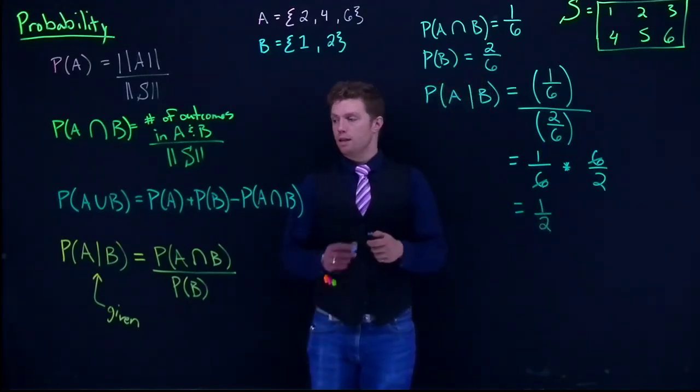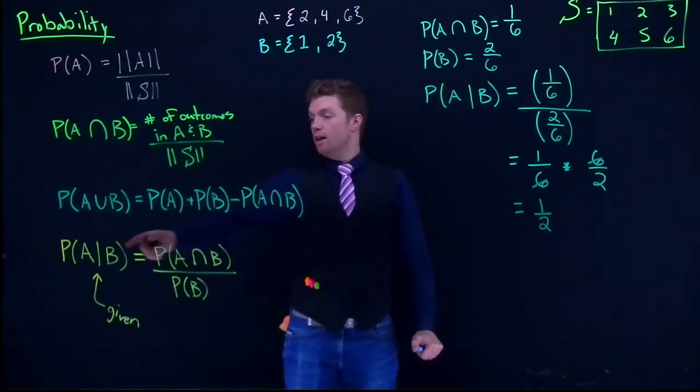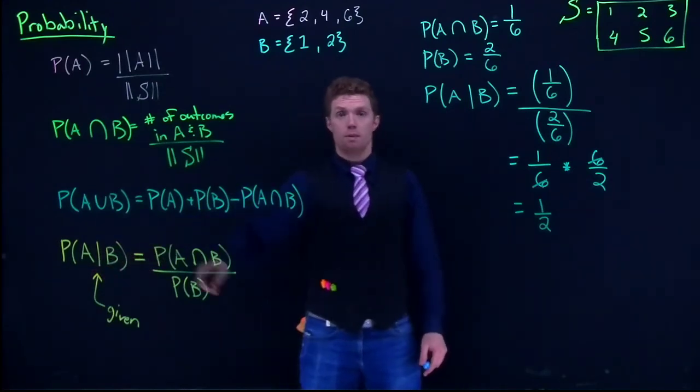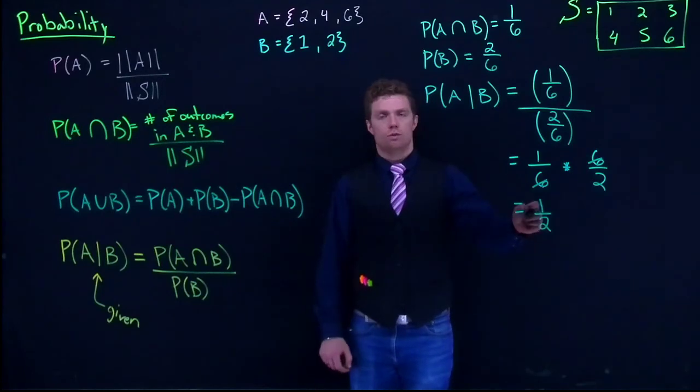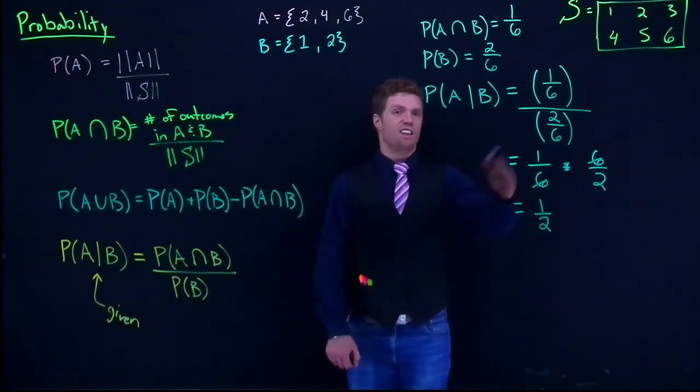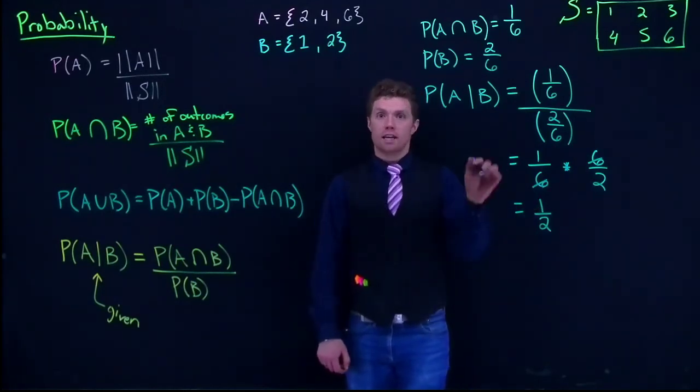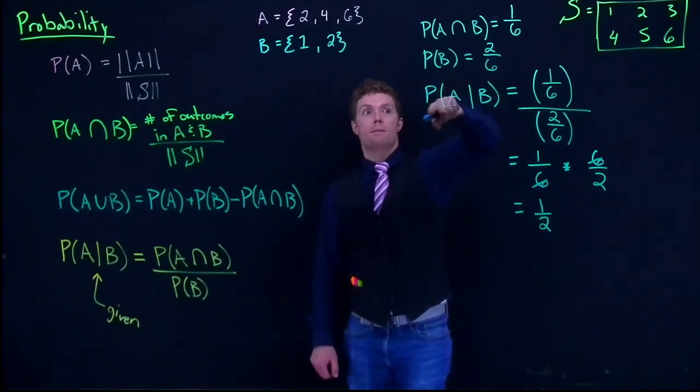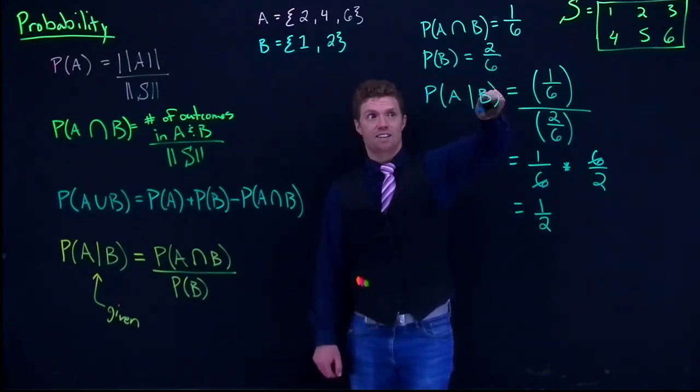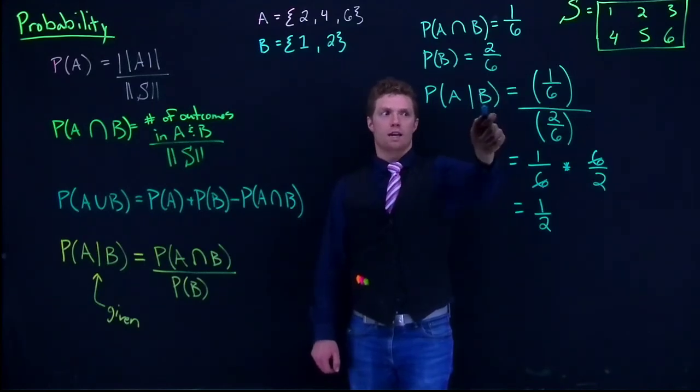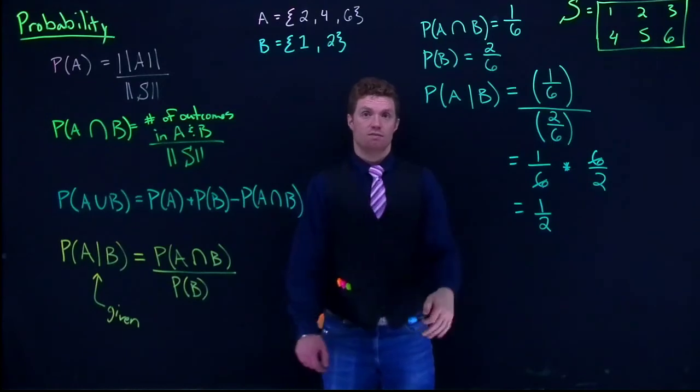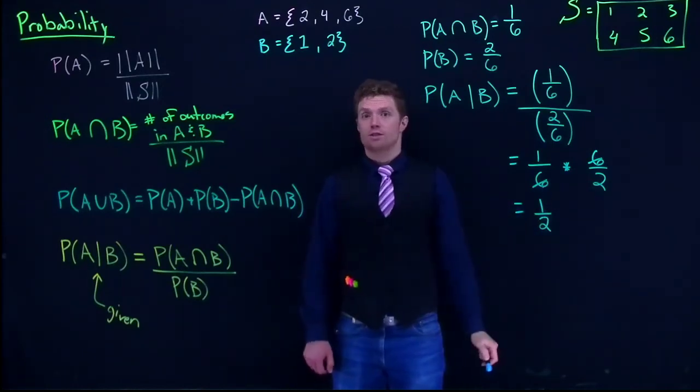And this is going to be equal one out of two. So the probability that an event A has occurred given that B, we know B has occurred, is one half. So that's kind of like the long way to do it. But the nice thing about this is it's bulletproof. You find the intersection, find the probability of the second of the one that's given, and then you just divide the two and you're done. It'll kick out the right answer.